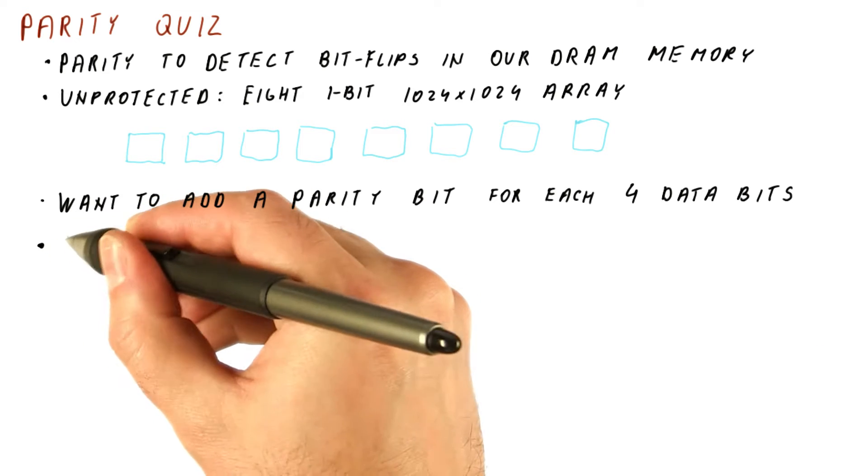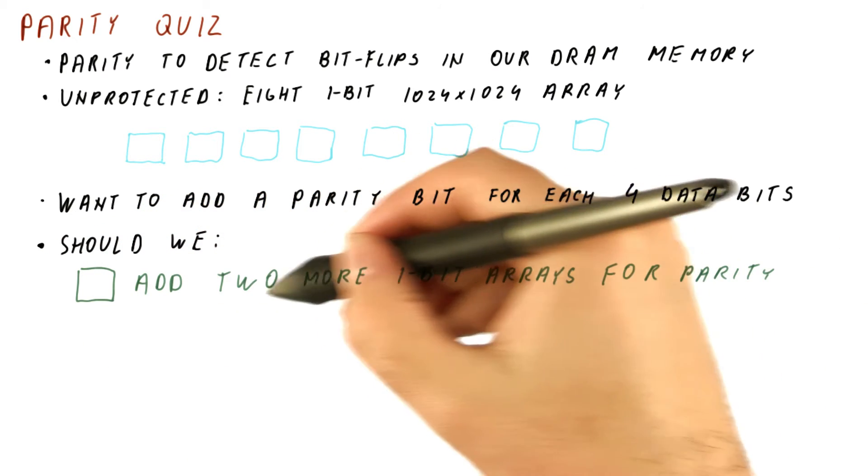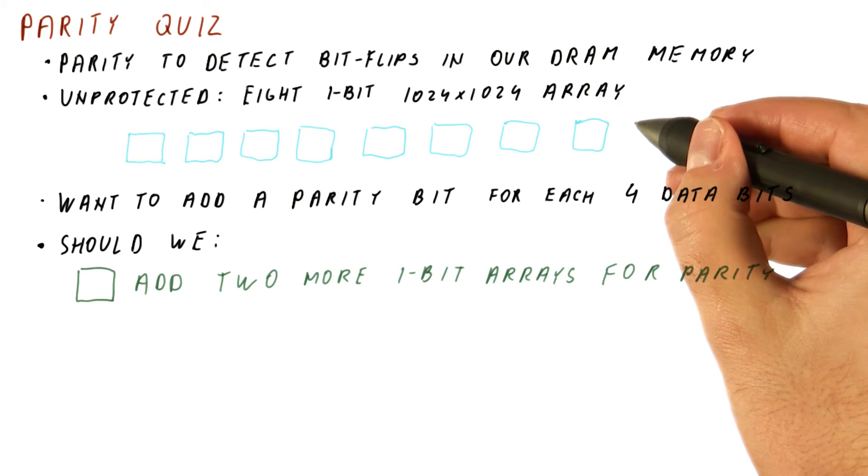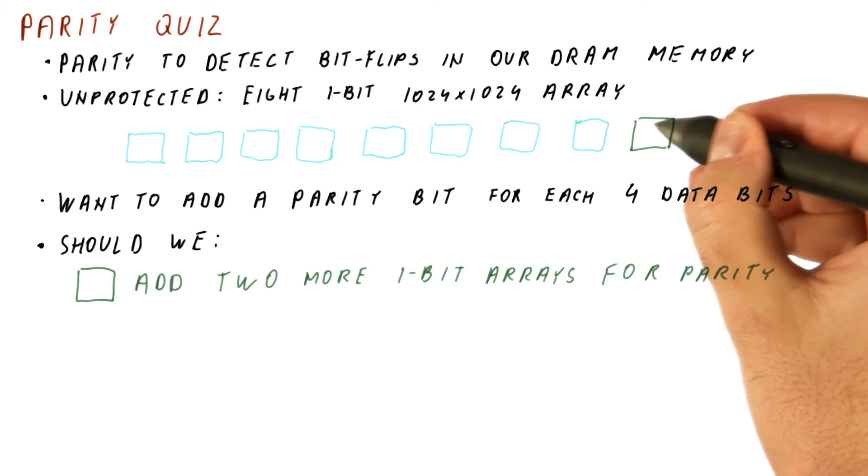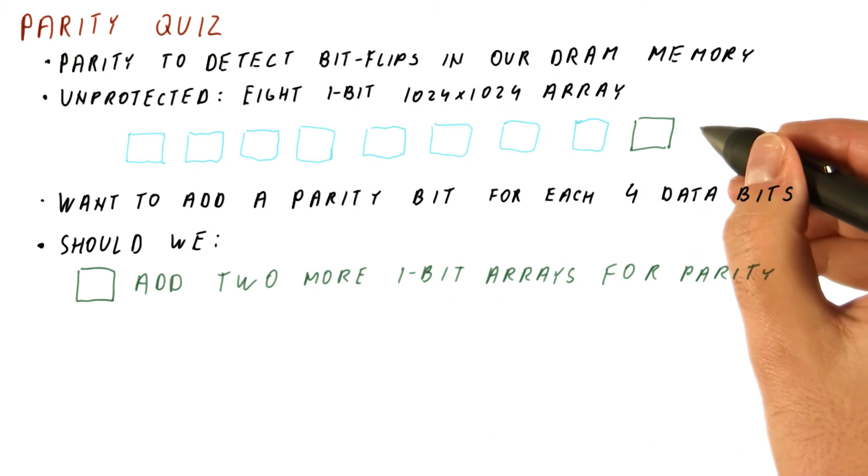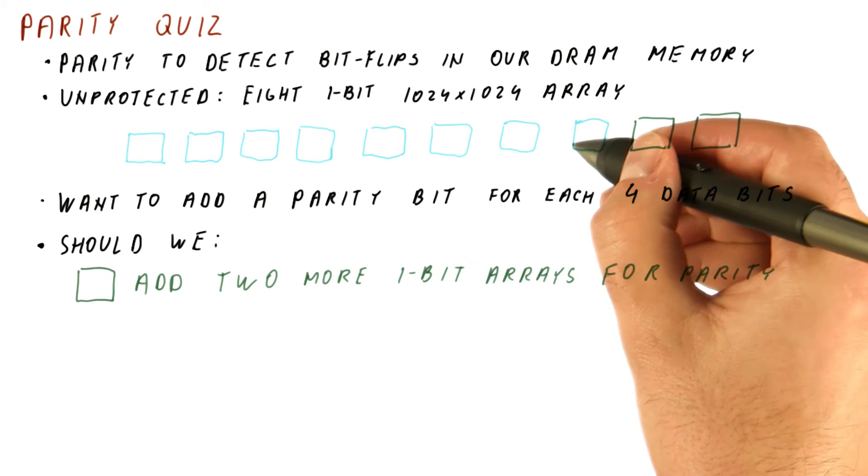The question for you is whether we should add two more one-bit arrays of this kind for parity. So the idea is that we would add another array here, and the bit stored here would be the parity for the first four bits here. And another one would store the parity for these four data bits.